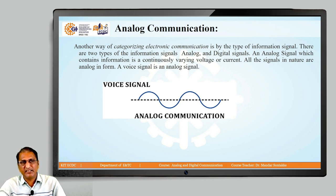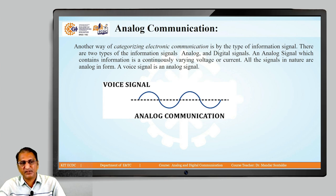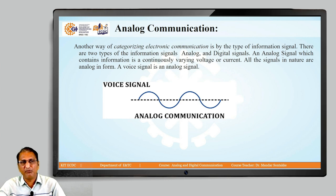The third classification is analog communication versus digital communication. The best example of analog is voice signal. Our voice signal is analog in nature — it is continuous. The waveform is a sine wave. Sine wave is the example of analog communication. Whenever for communication we are using an analog signal, it is called as analog communication.